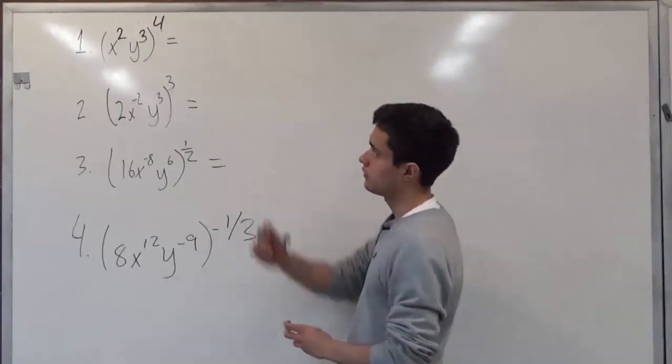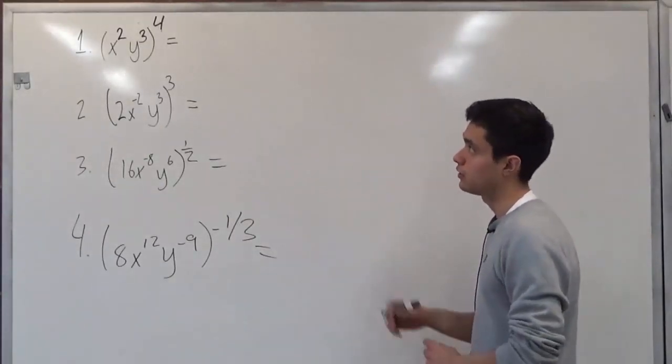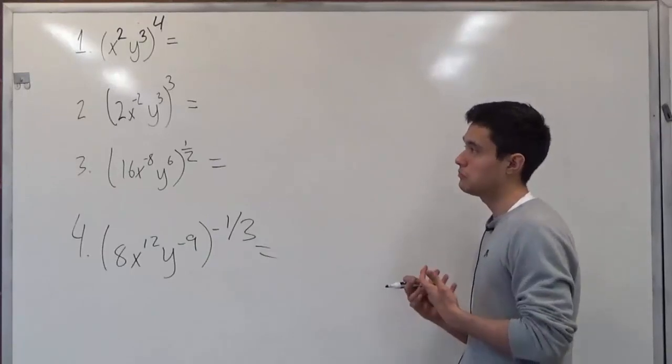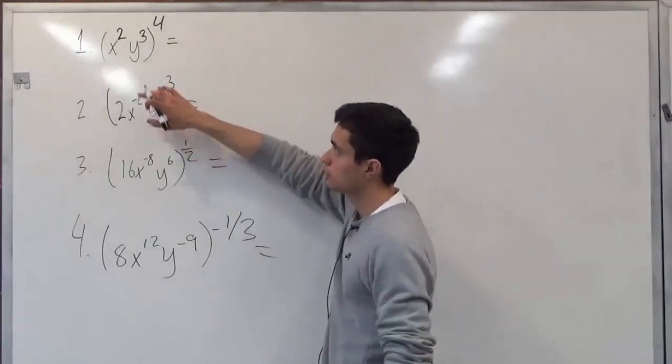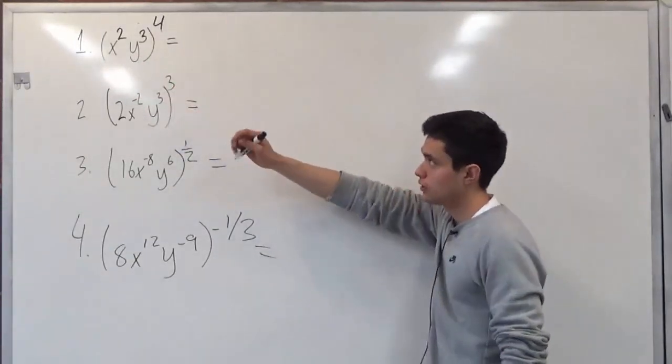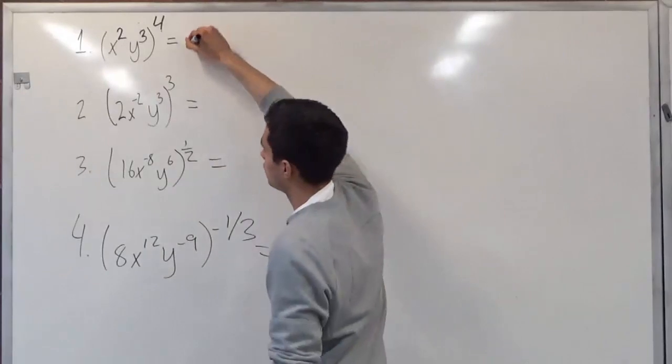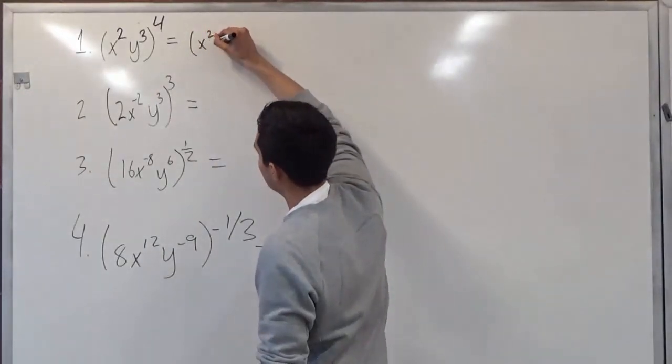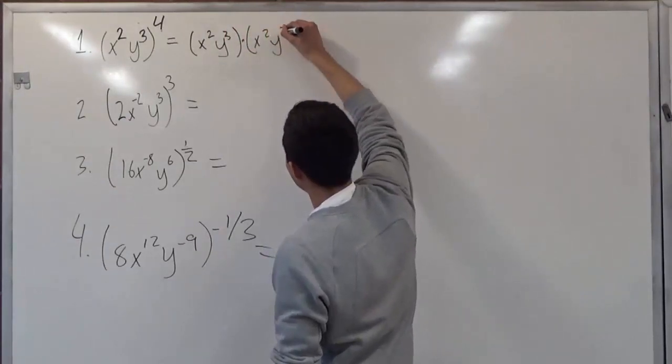So let's start with the first one. What we see here is x squared times y to the third to the fourth power. So originally, what this basically means is that we're multiplying this part four times. So initially, it could look like this, times x squared y to the third.